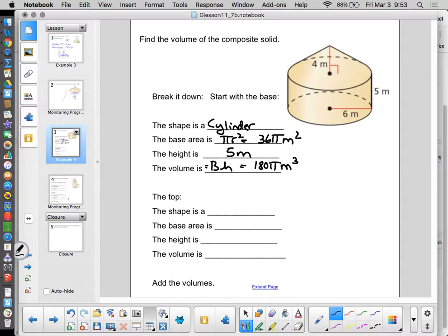The top part we'll do separately, the shape of the top is a cone. The base area is still pi r squared, the same radius as we had before, so we already have that, that's 36 pi meters squared. The height of the cone is 4 meters, and the volume is base area times height divided by 3, or 36 pi times 4 divided by 3, which is 48 pi meters cubed.